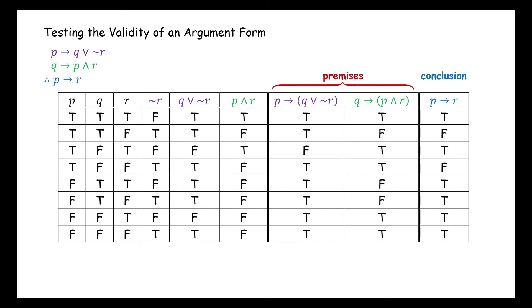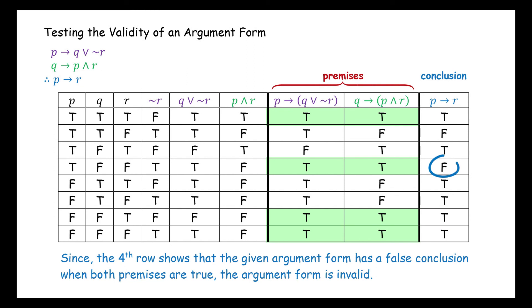Recall that when the premises of an argument are true, if the conclusion is true the argument is valid, and if the conclusion is false the argument is invalid. So we only consider the rows where all premises are true: the first row, the fourth row, the seventh row, and the eighth row. We note that the conclusion is true in the first, seventh, and eighth rows, so these rows are not a problem. However, since the fourth row shows that the given argument form has a false conclusion when both premises are true, the argument form is invalid.